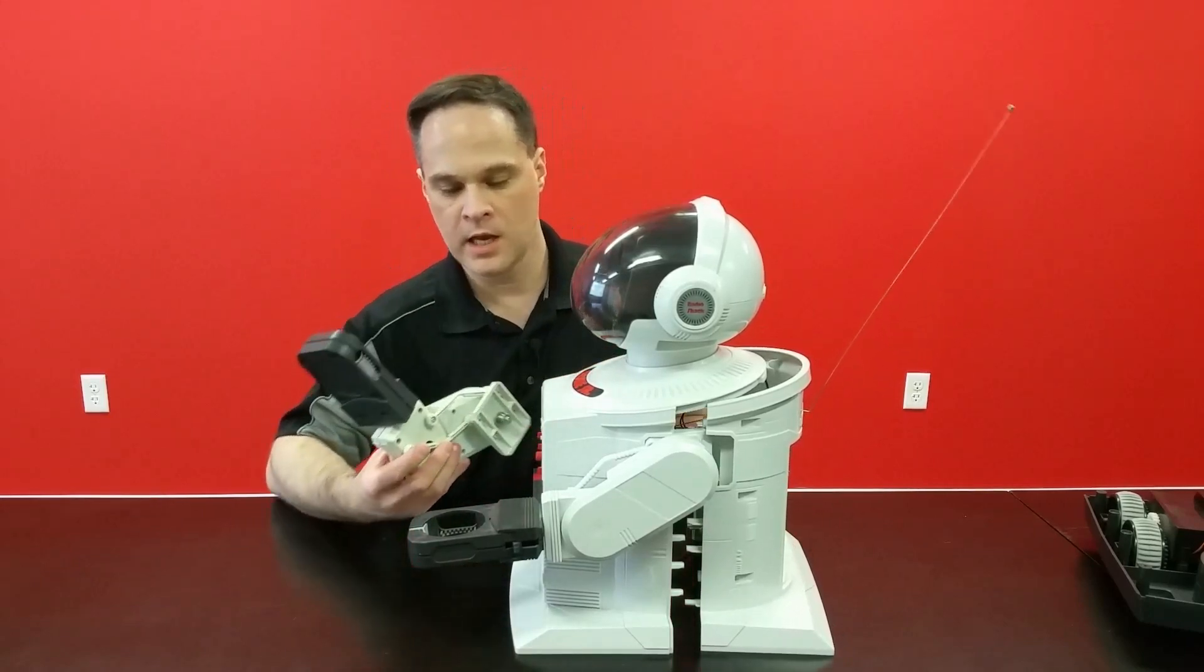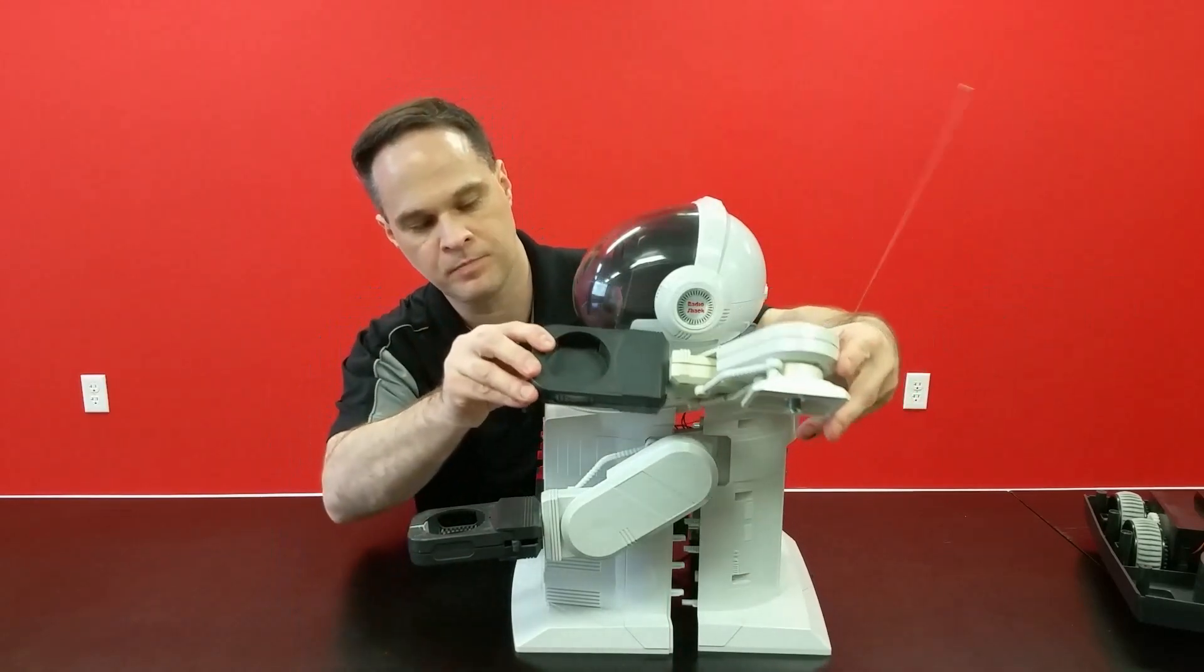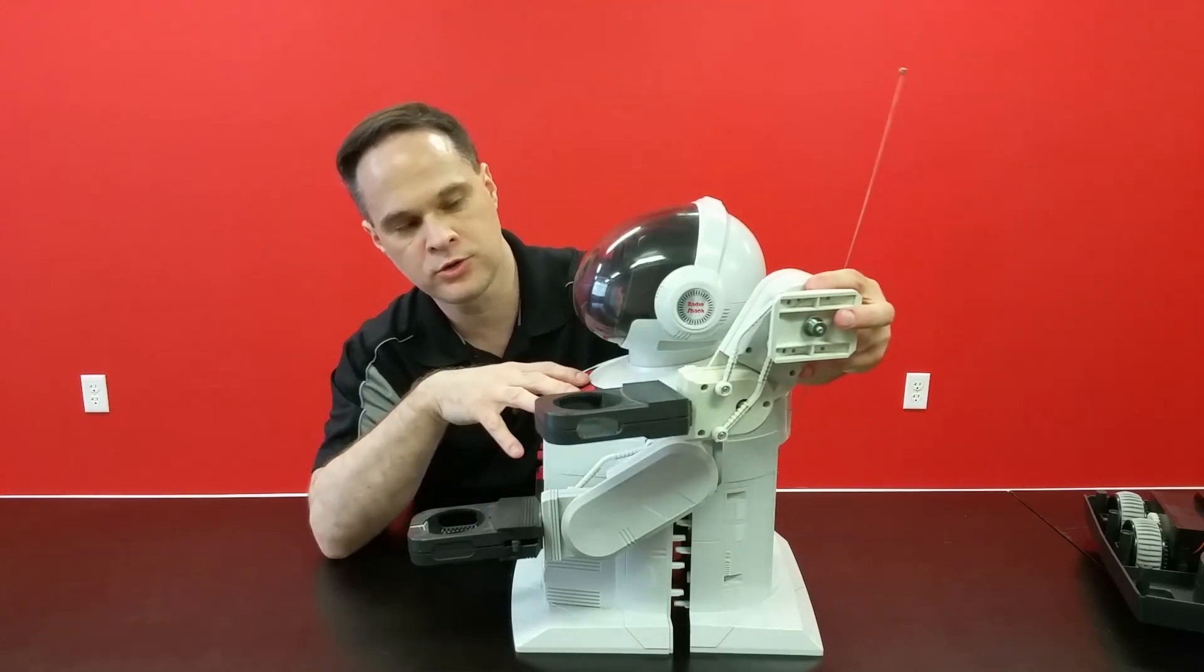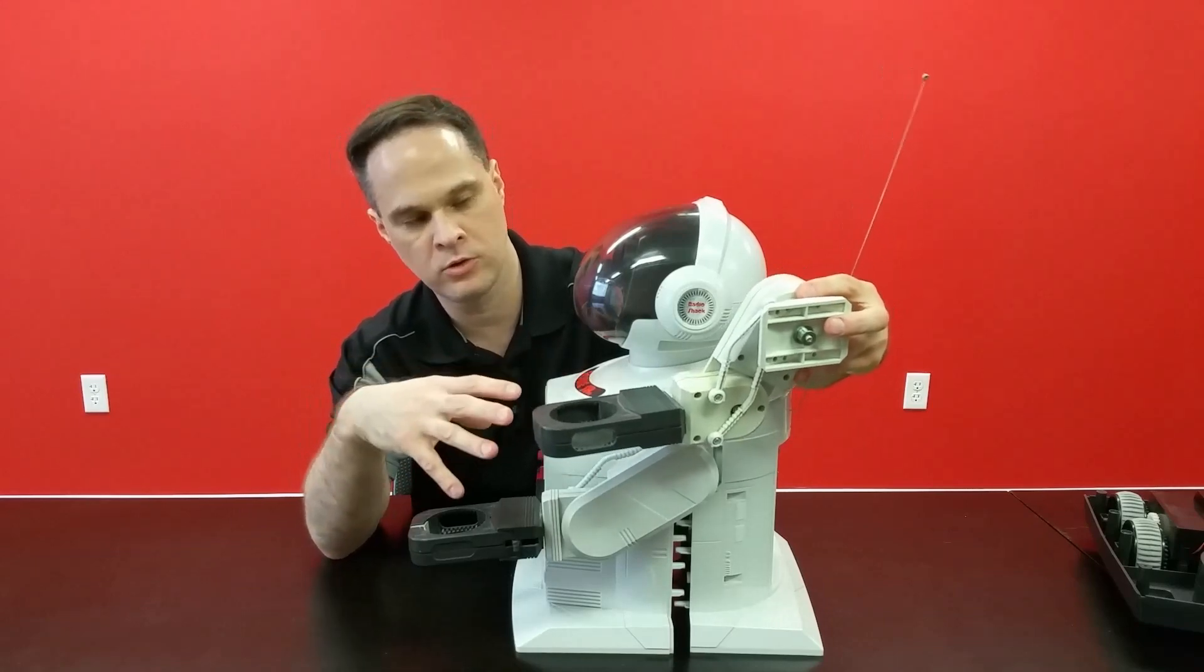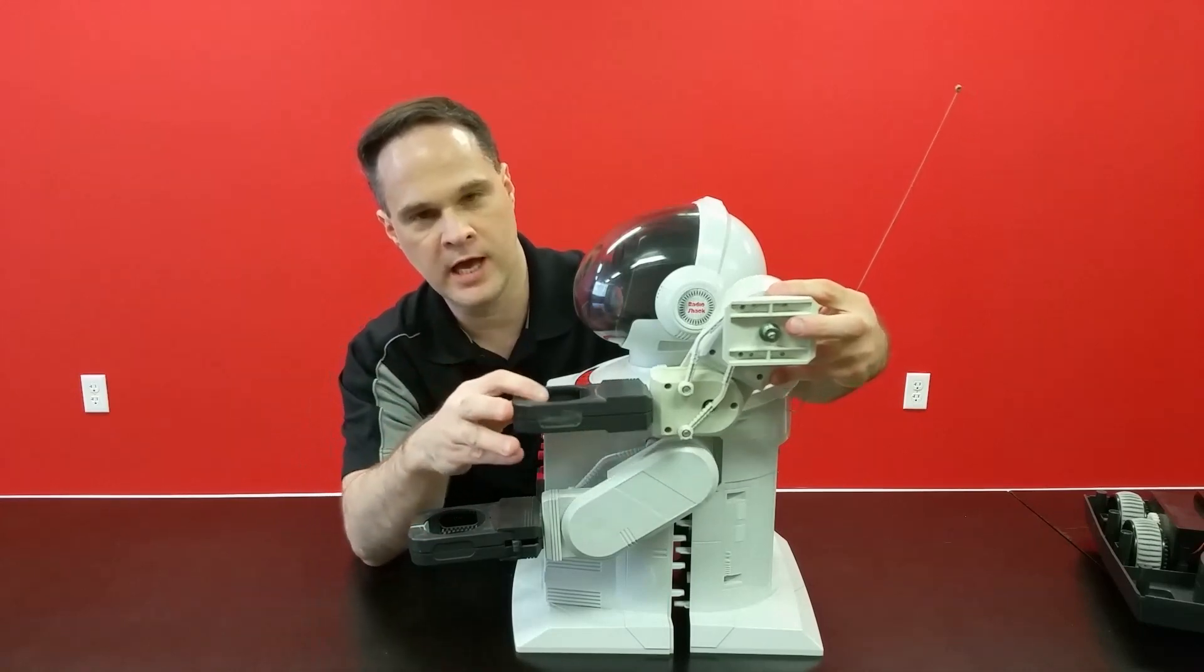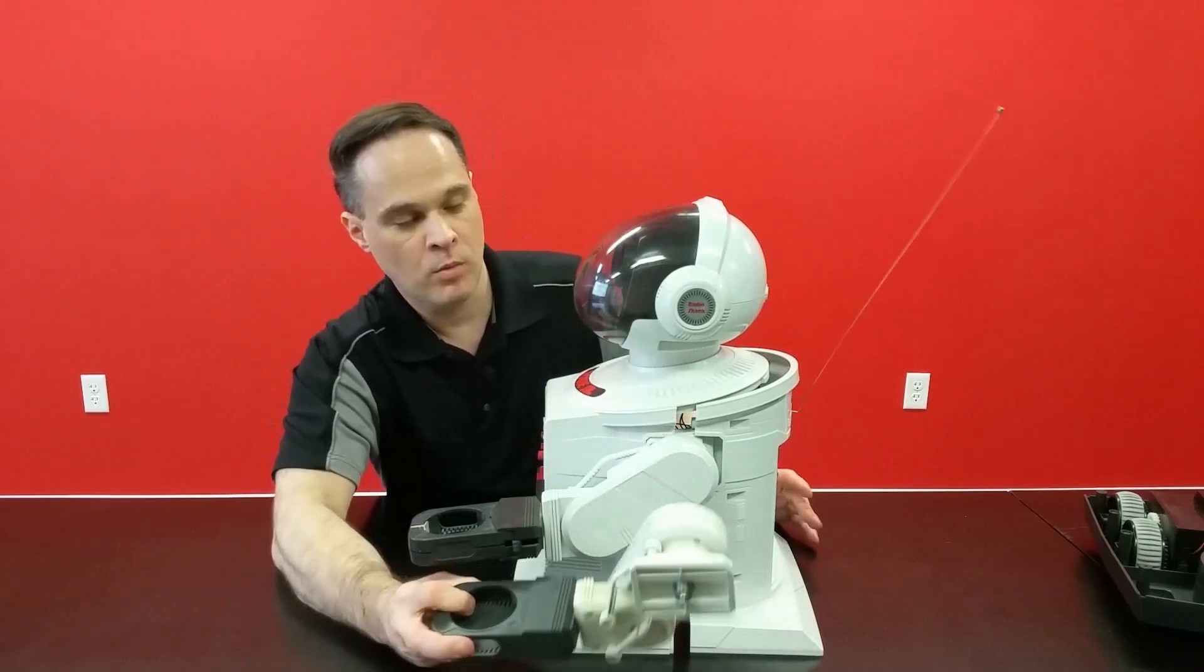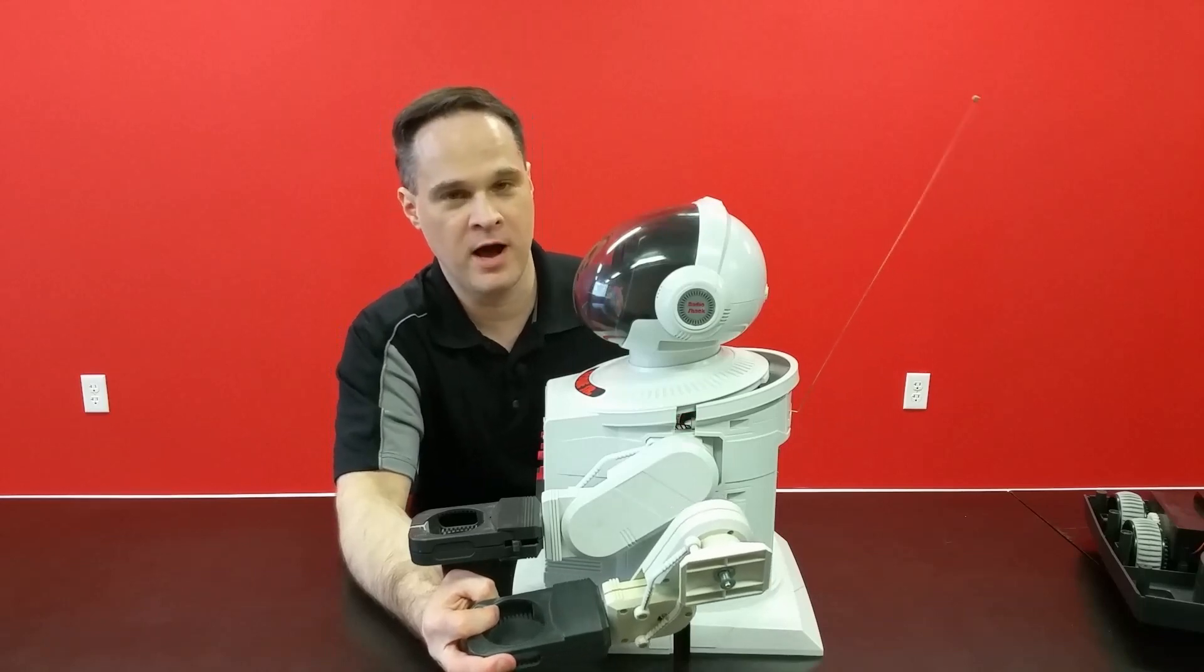One thing I want to mention is the color of the plastic has over time changed. These old toys from the 1980s, often as a result of being exposed to UV rays, have yellowing. This Robie Senior has very little yellowing, but I think I actually swapped arms with a different Robie Senior, and you can see that they don't exactly match.